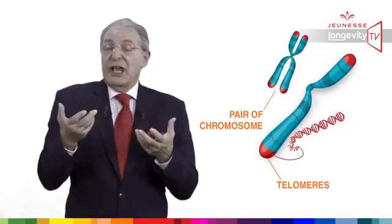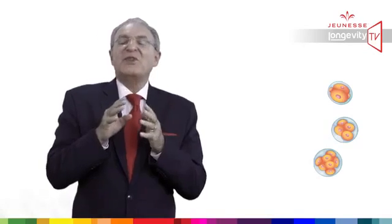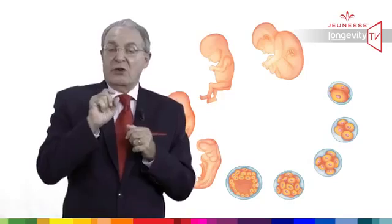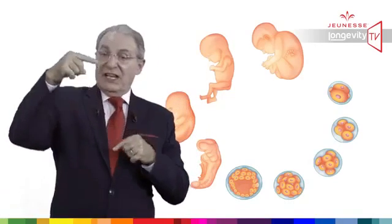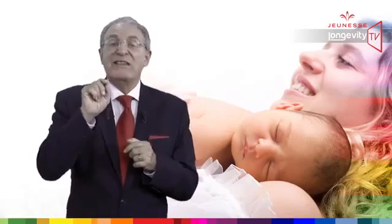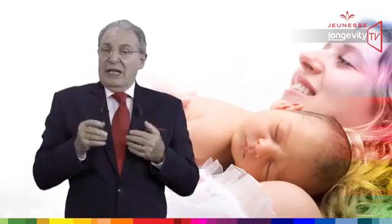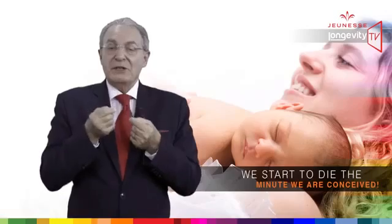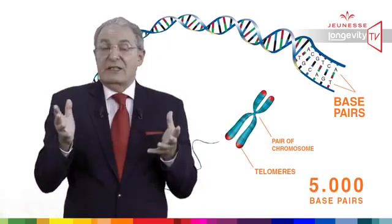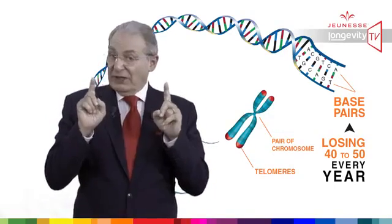Today we can measure the biological age of cells by the length of the telomere. When we are conceived, the embryo has about 15,000 base pairs in its telomere. A base pair is a standard unit of measurement in the chromosome, and the total length of a DNA strand is 3 billion base pairs. After many replications, a newborn has only 10,000 base pairs in each telomere — we have already lost 33% of our telomere length. In a sense, we start to die the minute we are conceived.